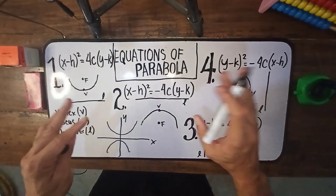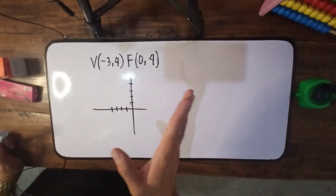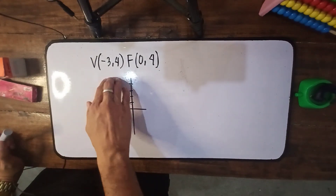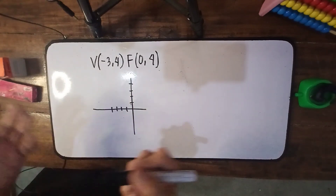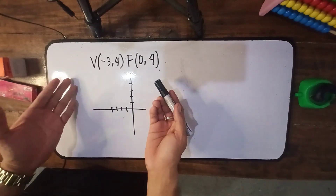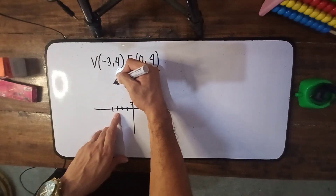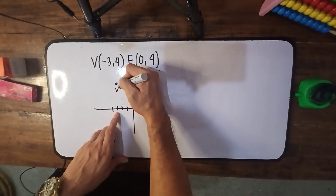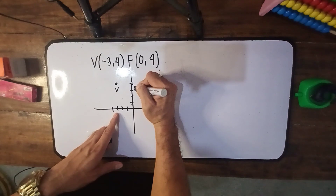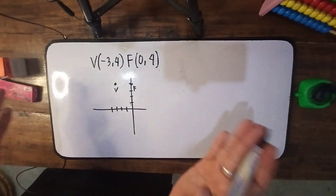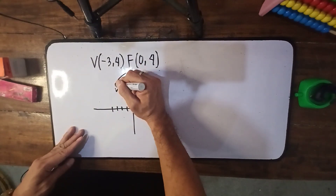Let us apply what we have learned. If the vertex is at negative 3 comma 4 and the focus is 0 comma 4, anong equation na gagamitin natin dito? Kailangan natin itong ma-visualize — kailangan natin i-plot yung mga points. So negative 3 comma 4 at 0 comma 4, nandito yung vertex at nandito yung focus. Sabi ko sa inyo kanina, ang focus laging nasa loob ng parabola. So therefore, kung nandito yung focus, ibig sabihin ang parabola natin naka-open sa kanan.